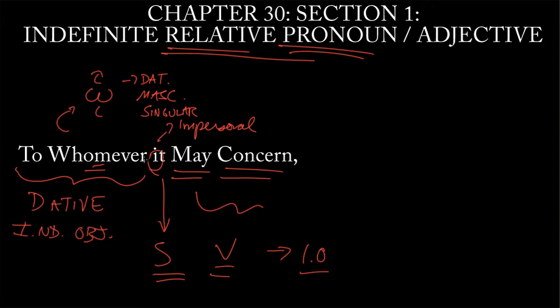But now let's think about the difference between what it would mean to say to whom it may concern and to whomever. What is that difference? Well, to whom is our relative pronoun, things that we've been seeing for a while now. And note that in English, what we've just done is we've tacked on this word ever to the end of our relative pronoun, whom. To whom it may concern. To whomever it may concern.